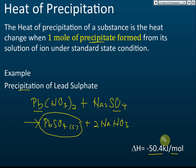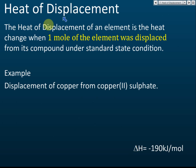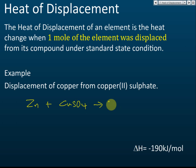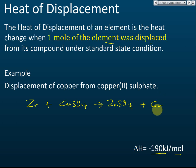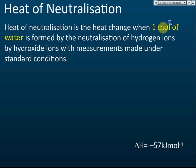Heat of displacement: the heat change when one mole of an element is displaced. For example, displacement of copper from copper sulfate — zinc reacts with copper sulfate to form zinc sulfate, and copper is displaced. This reaction releases 190 kilojoules per mole, meaning per one mole of copper displaced.